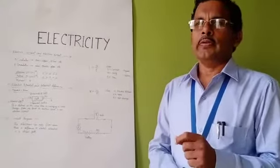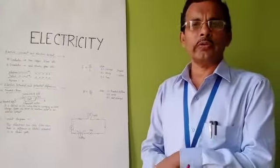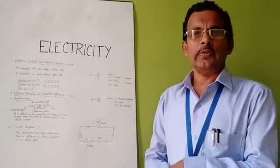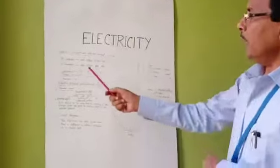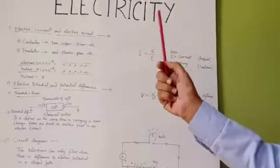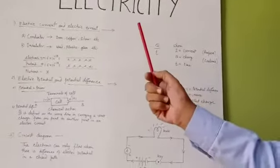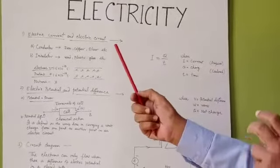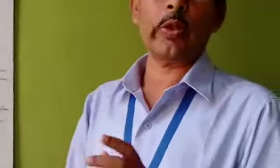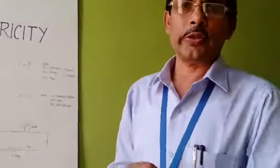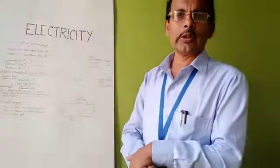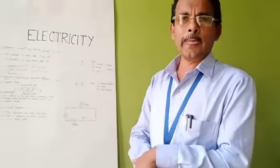Electricity means the flow of electrons through a wire or through a circuit. As you know, electric current and electric circuit involve conductors and insulators. Without conductors and insulators we cannot discuss electricity. So the question arises — what are conductors?